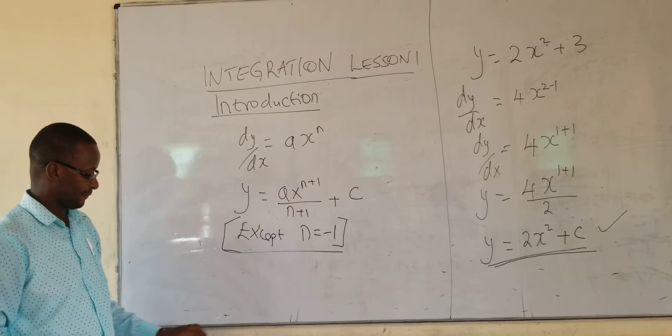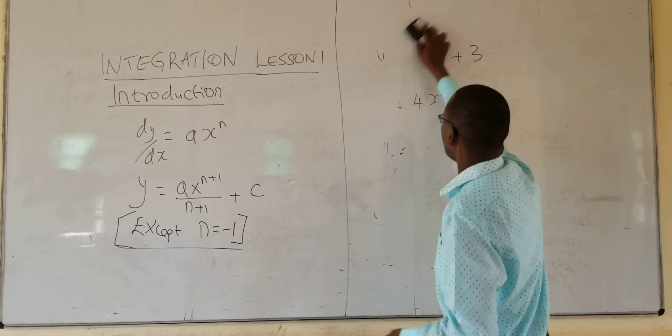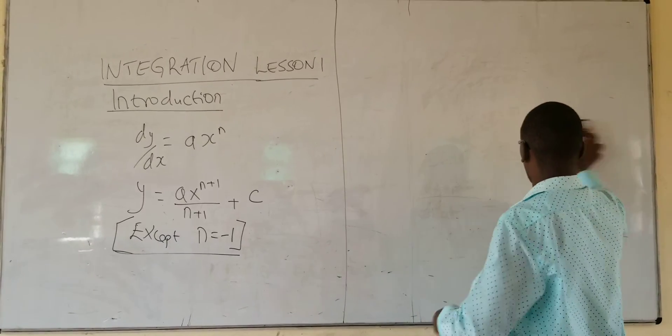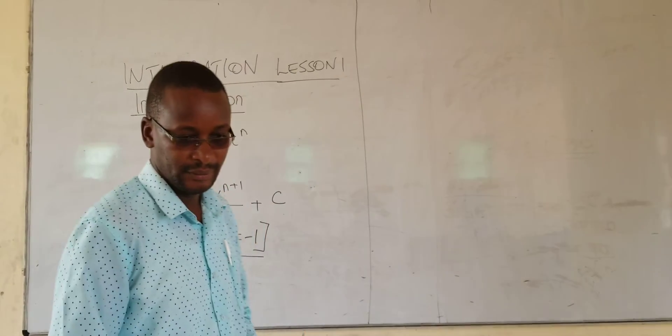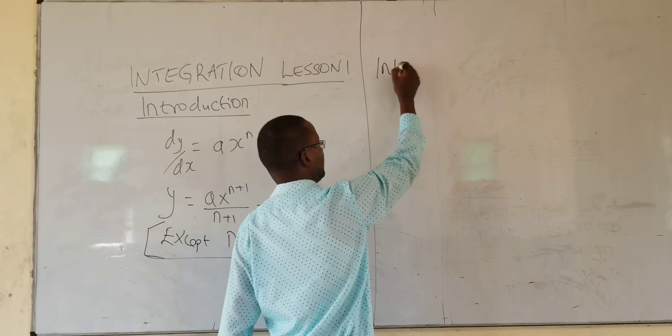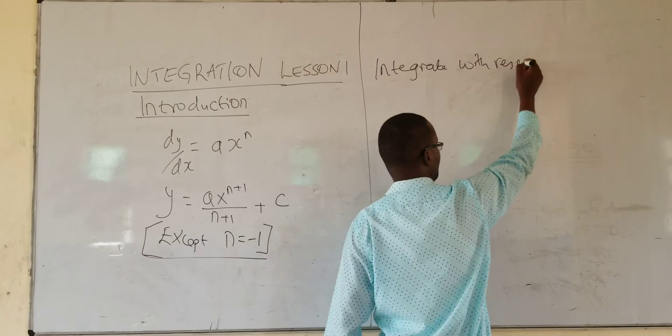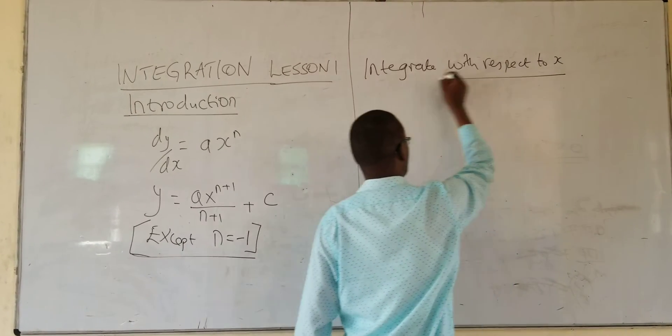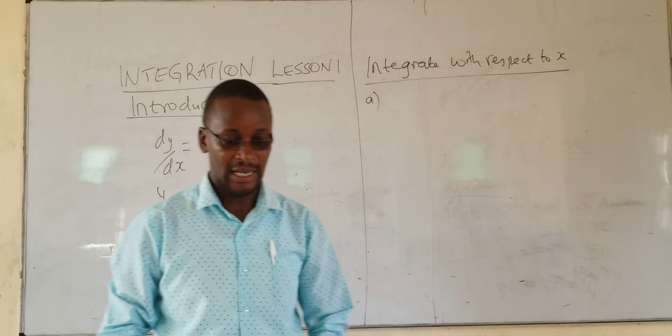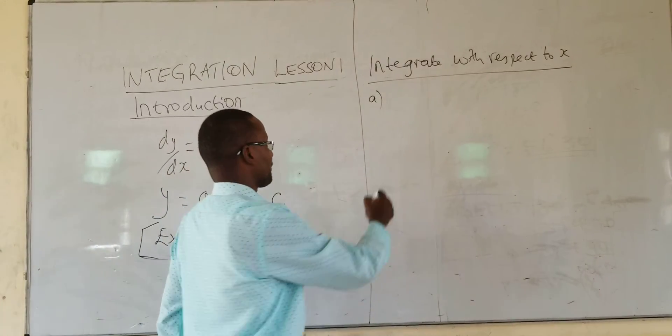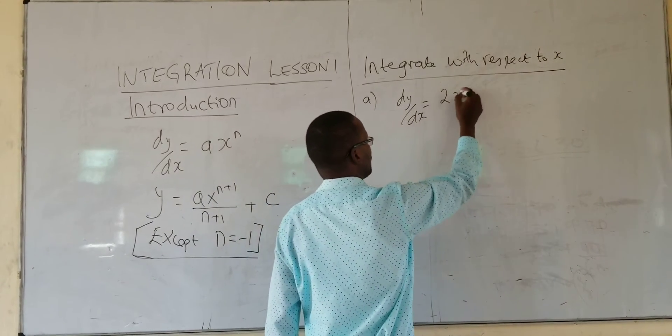I want to give you an example. Integrate with respect to x. When you say with respect to x, it means x is the unknown. You can have different unknowns, as you are going to see. dy over dx is equals to 2x.